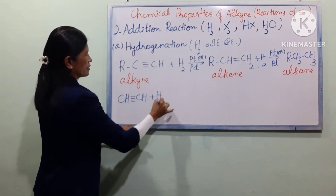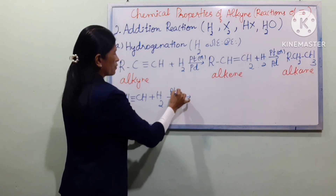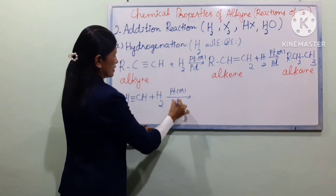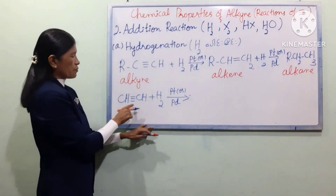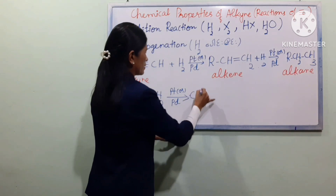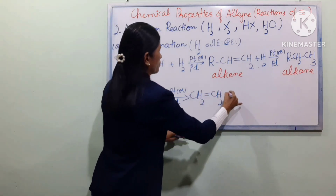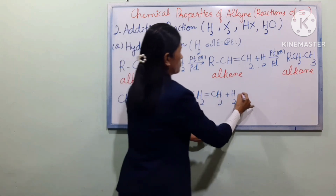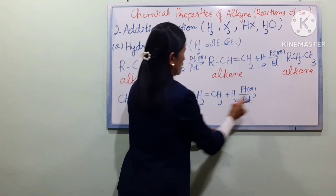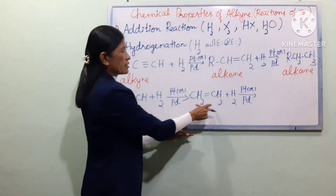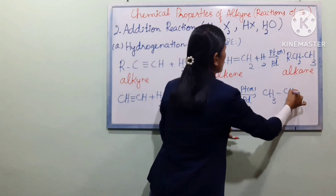In the first step: R–C≡CH + H2 gives an alkene with a CH2 group. In the second step: CH2=CH + H2 gives a fully saturated product with another CH2 group added.